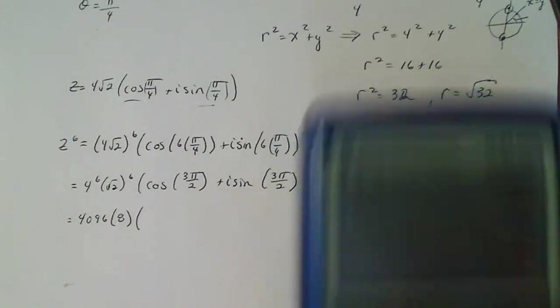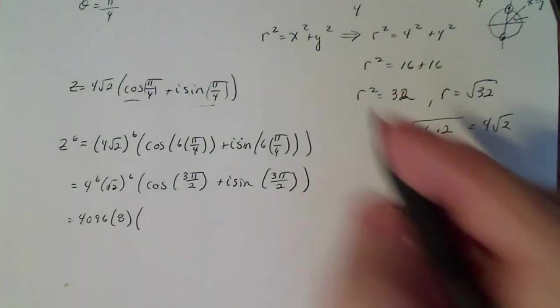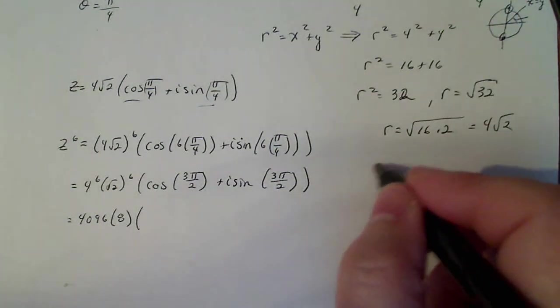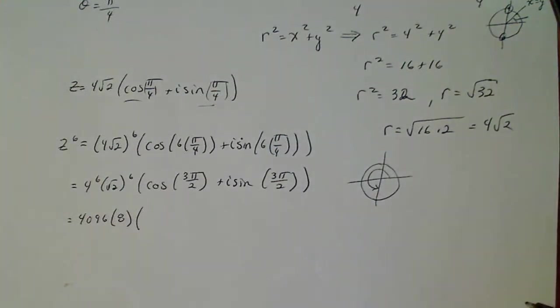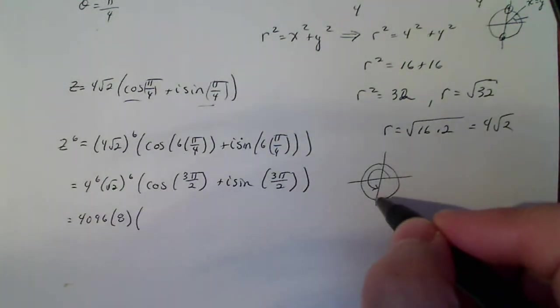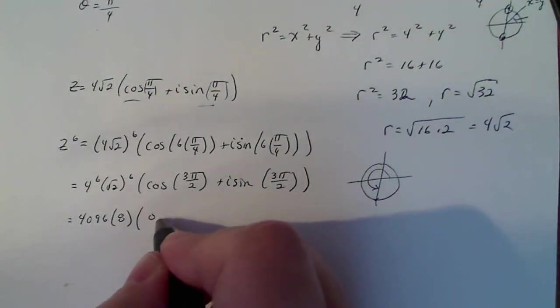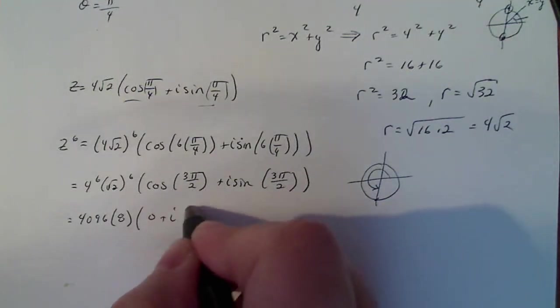Now I want to think about what the cosine of 3 pi over 2 and the sine of 3 pi over 2 is. So, again, those are all standard angles. That's this angle right down here. So I know cosine down there at that point is 0 and sine is minus 1.